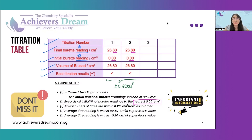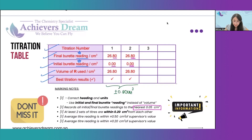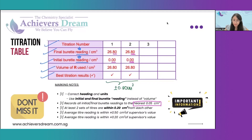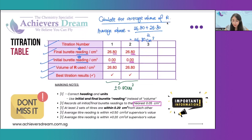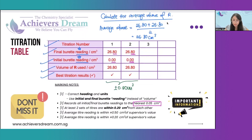The last two marks will be based on the accuracy of your values compared to the supervisor's value. Most of the time after the titration table, we move on to the calculation, and one compulsory question will be to calculate the average volume.